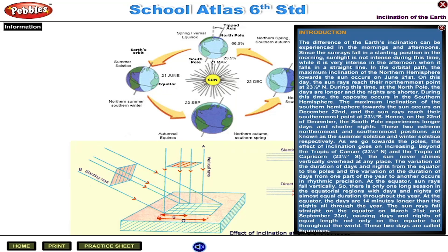At the equator, the days are 14 minutes longer than the nights all through the year. The Sun rays fall straight on the equator on March 21st and September 23rd, causing days and nights of equal length not only on the equator but throughout the world. These two days are called equinoxes.